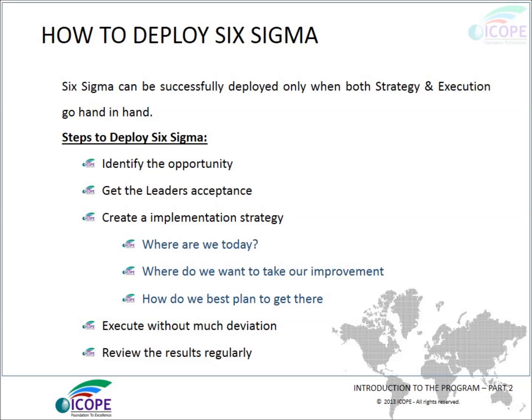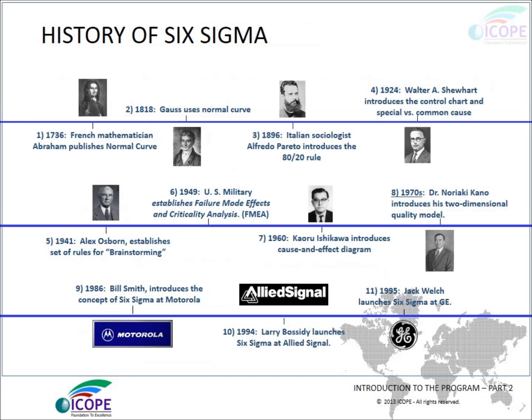Execute without much deviation and review the results regularly. The history of Six Sigma comes with more than a hundred years of history. It started in 1736 where a French mathematician introduced the normal curve, later improved by Gauss. Italian statistician Alfredo Pareto invented the 80-20 rule, Shewhart introduced continual improvement charts, and Alex Osborne established brainstorming.